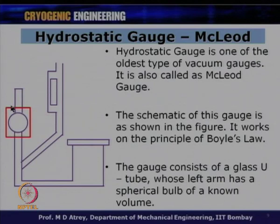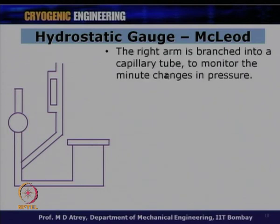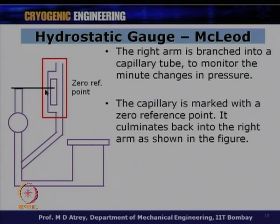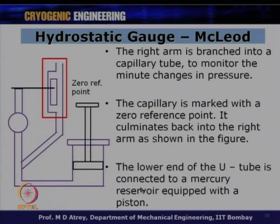The gauge consists of a glass U-tube whose left arm has a spherical bulb of known volume. The right arm is branched into a capillary tube to monitor minute changes in pressure. The capillary is marked with a zero reference point and culminates back into the right arm. The lower end of the U-tube is connected to a mercury reservoir equipped with a piston, which controls the motion of mercury in and out of the gauge.